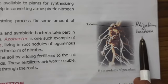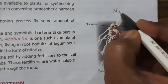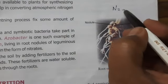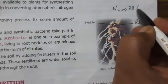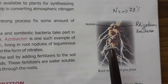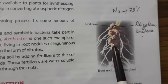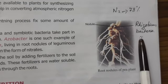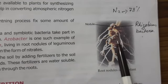In our atmosphere, 78% of the air is nitrogen. But this nitrogen cannot be taken by plants directly. So the rhizobium bacteria takes this nitrogen and converts it into a very simple form.